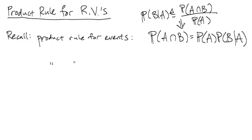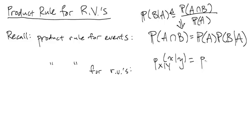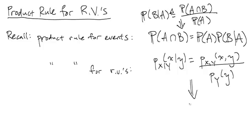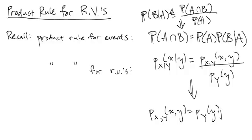To get the product rule for random variables, the idea is the same. We're going to take the definition of conditional probability for random variables and rearrange terms to get the product rule for random variables, where we have the joint distribution is equal to the probability of just Y by itself times the probability of X given Y.